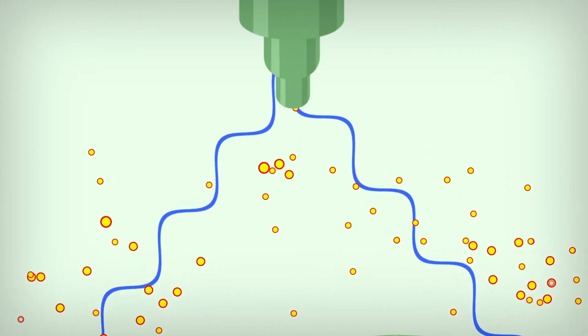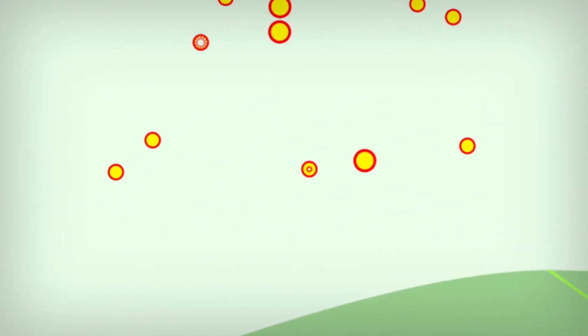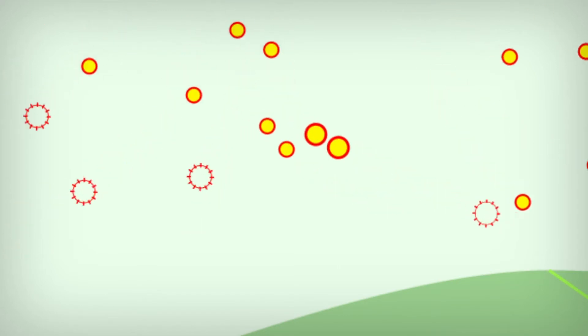Small drops, called fines, are prone to drift and evaporate more quickly, never making it onto the leaf's surface.